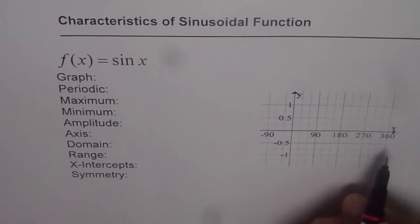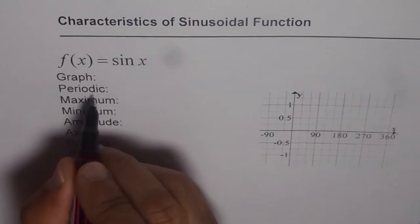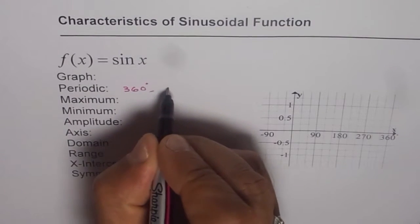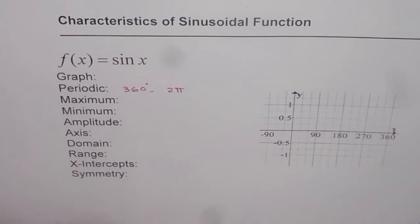Or in radians you can say 2π. So we can write period of the function is 360 degrees or 2π. So 2π is in radians.